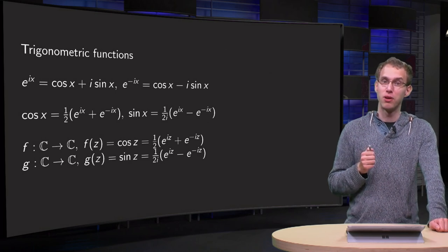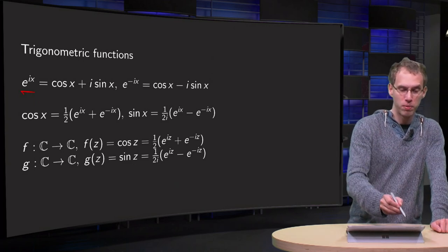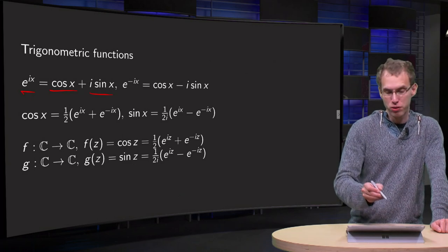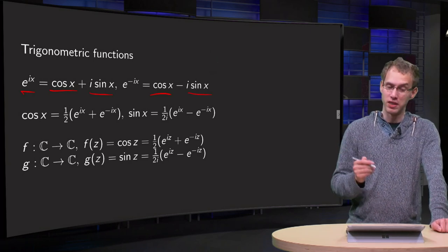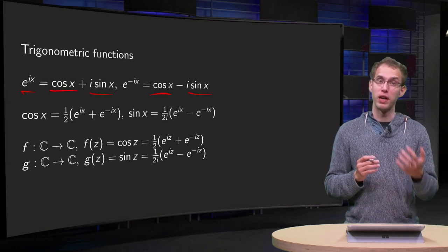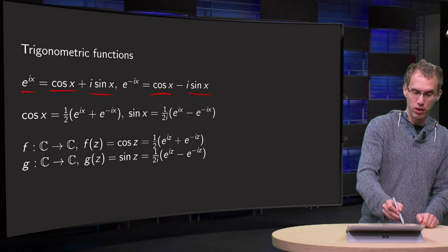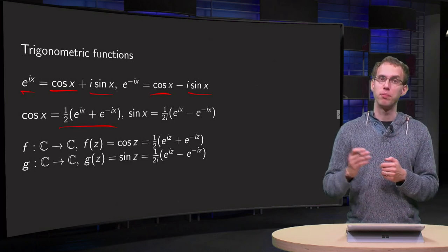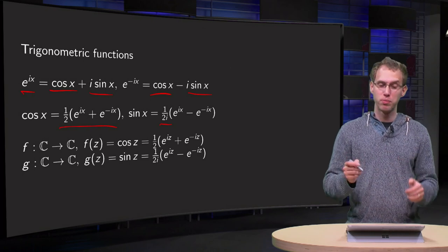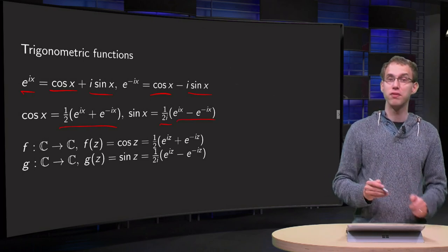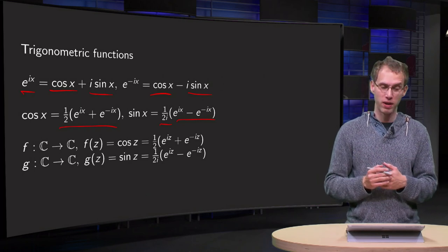So how is a complex sine and cosine defined? Well, we know e to the power ix in the real version. Euler's formula gives cosine x plus i times sine x, and you can also find e to the power minus ix equals cosine x minus i times sine x. So if you add those two up, you get e to the power ix plus e to the power minus ix equals 2 cosine x. And similarly for the sine, you find by subtracting those two: sine of x equals e to the power ix minus e to the power minus ix divided by 2i. So this motivates us to define the complex sine and cosine in a similar way as follows.